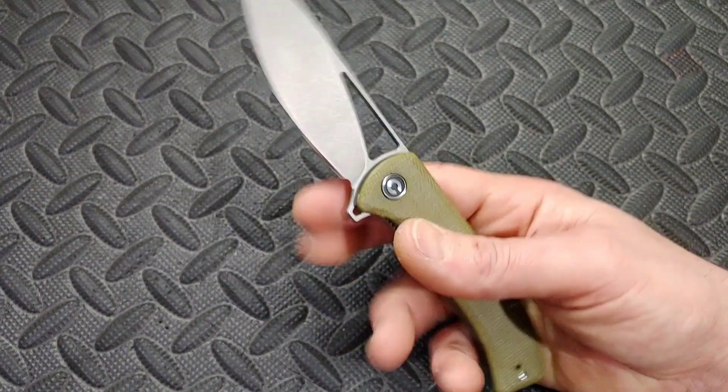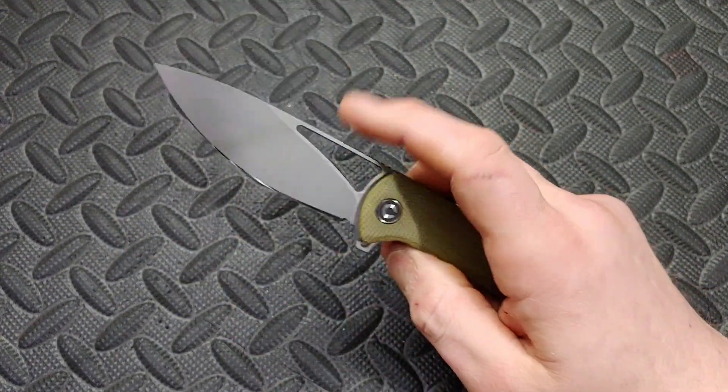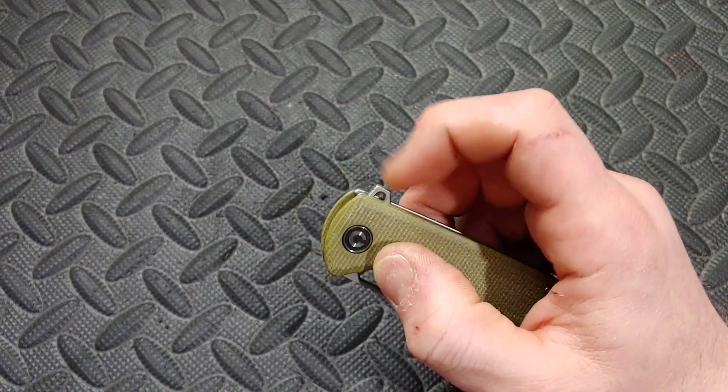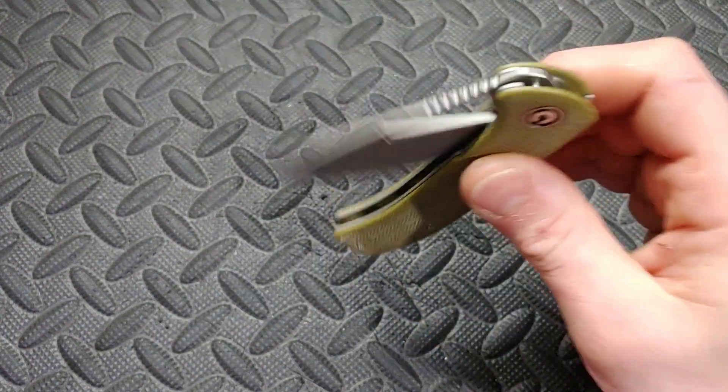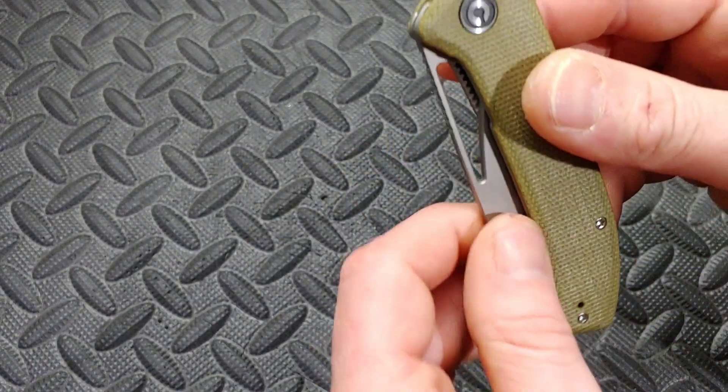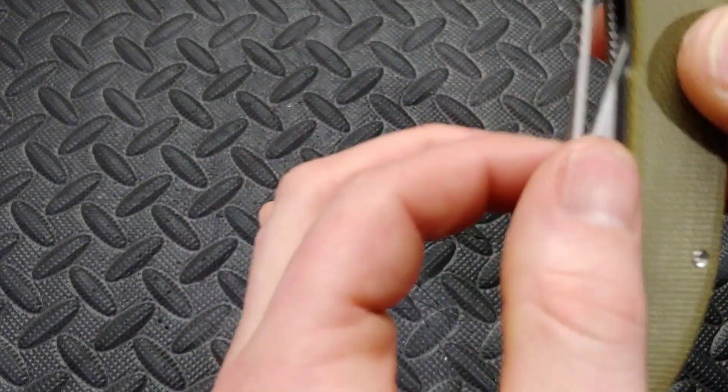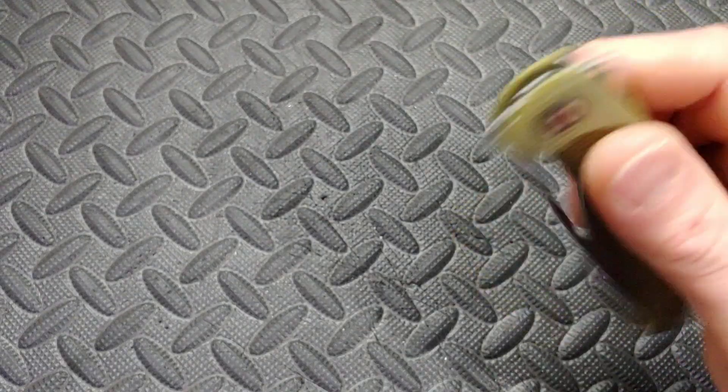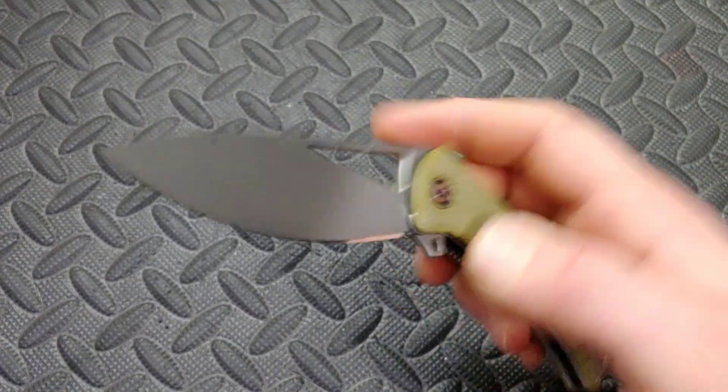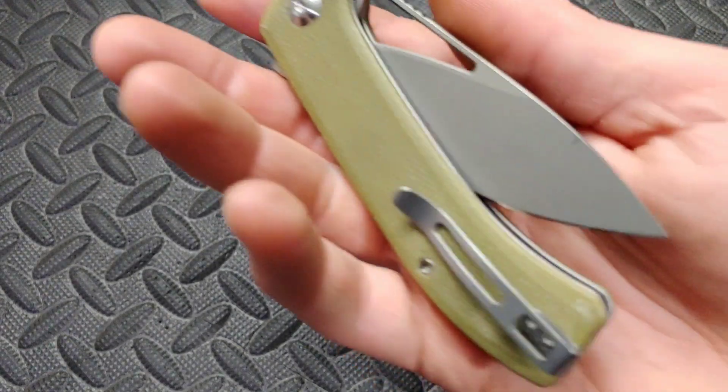Next up we have the Civivi Riffle. You wouldn't think that this thing would have a strong detent considering it has the reverse flicking hole. It works so good, I mean it's really not that bad. The flipper tab is a little sharp right here in the corner. I did hear a couple people say that theirs were on the lighter side, mine is not on the lighter side, mine's actually pretty strong but well tuned and it winds up working out really good. I actually enjoy that it has the strength of the detent it has.